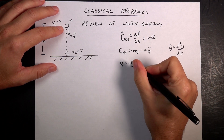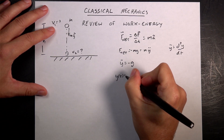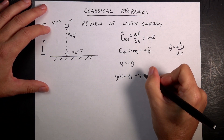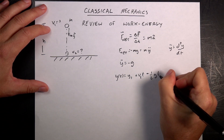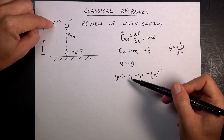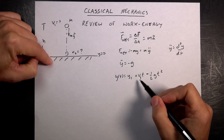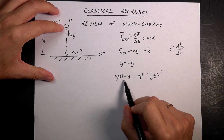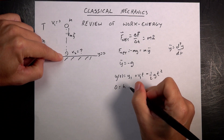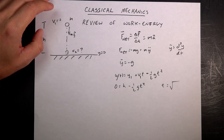That's the gravitational field. If I integrate that twice, I get y as a function of t: y equals y₁ plus v₁t minus one-half g t². If it starts at height h — call y equals 0 at the bottom — and the initial velocity is 0, then at the bottom: 0 equals h minus one-half g t². So I can solve for t: t equals the square root of 2h over g.